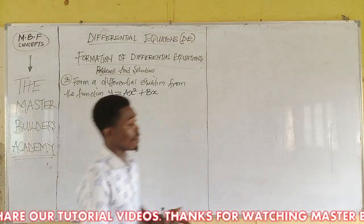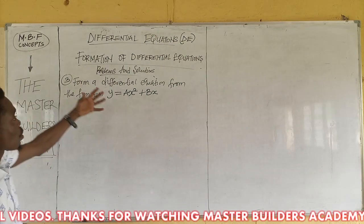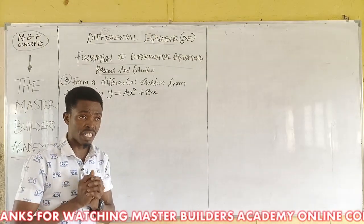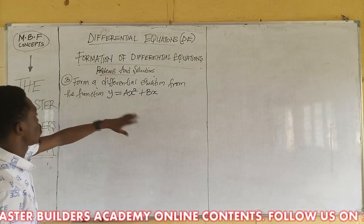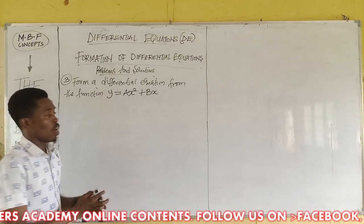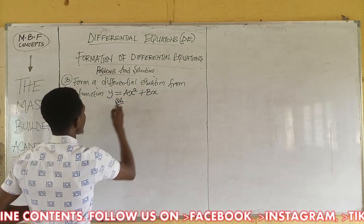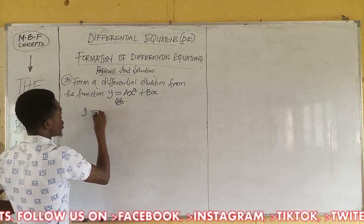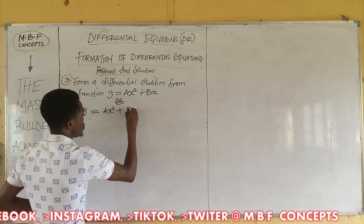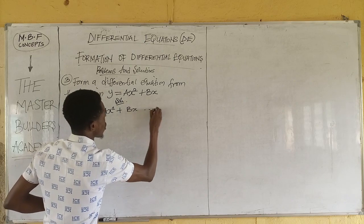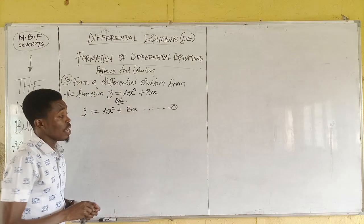Now, we have on the board question number three. We are still solving problems on the formation of differential equations. We are asked to form a differential equation from a given function. We put down our solution: y is equal to ax² plus bx. We can call this equation one.